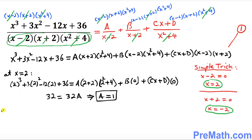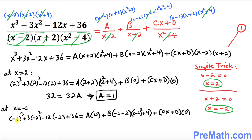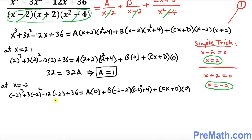Likewise, at x equals negative 2 we plug into Equation 1. In this case the A term vanishes because x plus 2 equals 0, and so does the Cx plus D term. Simplifying the left side gives 64 equals negative 32B, which tells us that B equals negative 2.